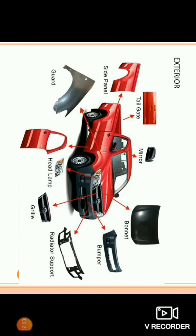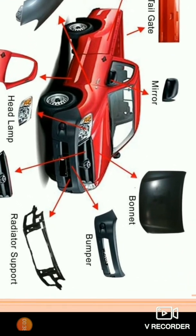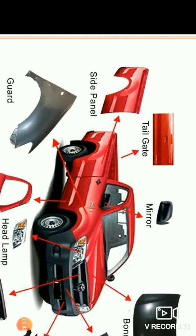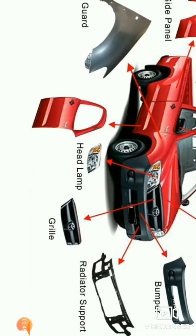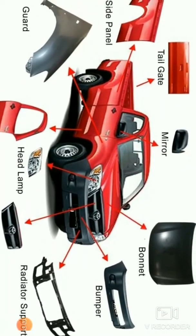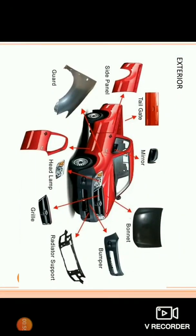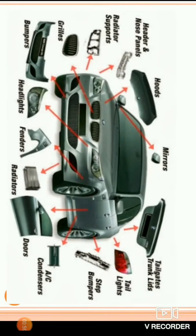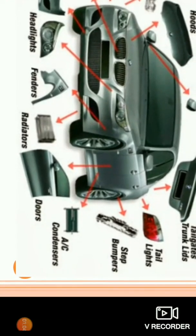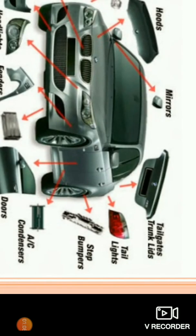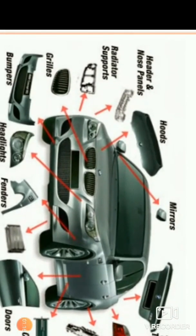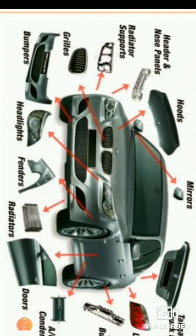Let's discuss about the exterior parts. The parts or plastic trims which are outside the vehicle are the exterior. Different assemblies include headlamps, grills, radiator supports, radiator supporting parts, bumper, bonnet, mirror, tailgates, side panels, guards, and fenders. Examples seen include fender, radiator grills, door, AC compressor, step bumpers, tail lights, tailgates, mirror, hood, and radiator supports. Those are a few exterior design parts.